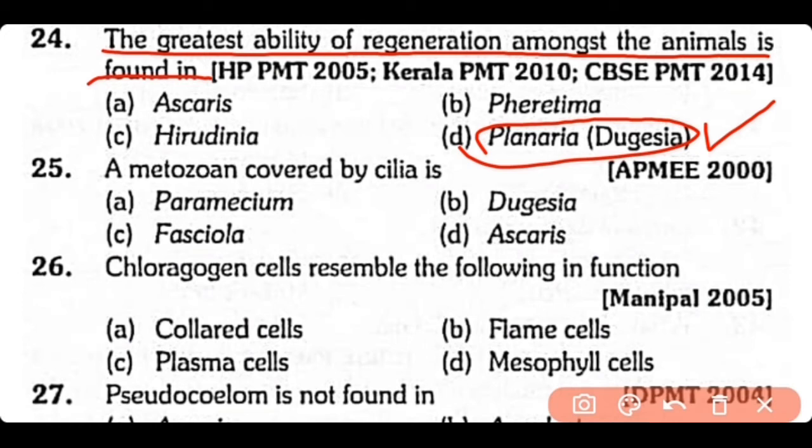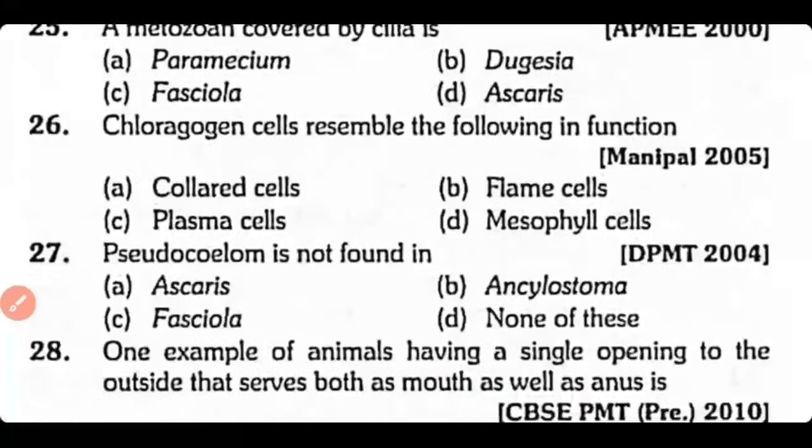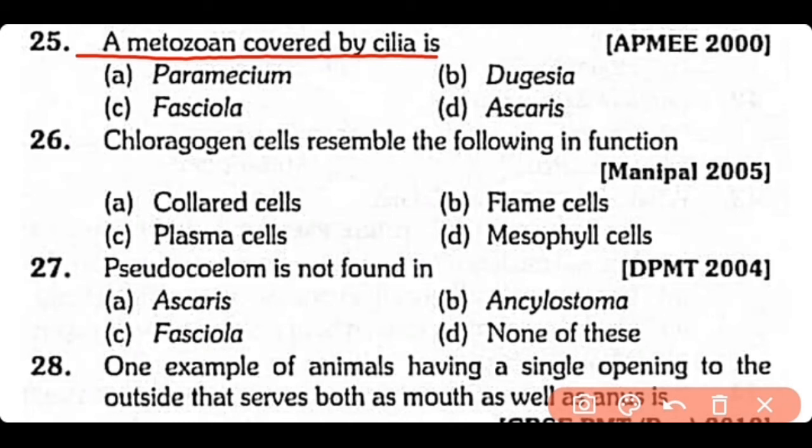Question no.25. A metazoan covered by cilia is: Paramecium, Dugesia, Fasciola, or Ascaris? The correct answer is option B. Planaria dugesia is a metazoan that is covered by cilia, having a ciliated epidermis.